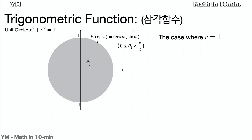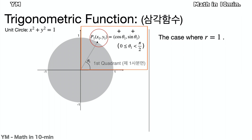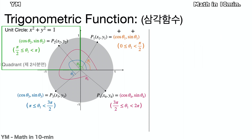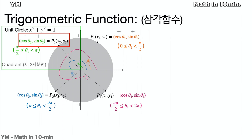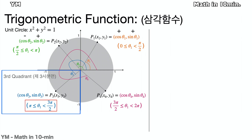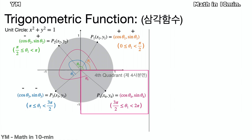Both cosine and sine are positive where theta is between 0 and pi over 2, so P is located in the first quadrant. When P is in the second quadrant, theta is between pi over 2 and pi; since X is negative and Y is positive, cosine is negative and sine is positive. When P is in the third quadrant, theta is between pi and 3 pi over 2; since both X and Y are negative, both cosine and sine are negative. When P is in the fourth quadrant, theta is between 3 pi over 2 and 2 pi; since X is positive and Y is negative, cosine is positive and sine is negative.